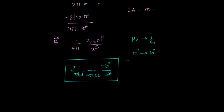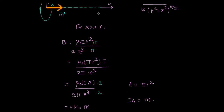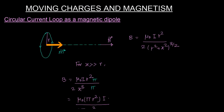So if I replace mu naught by 1 upon epsilon naught, m by p, and B by E, we get the actual electric field due to an electric dipole. Here we are having the actual magnetic field due to a magnetic dipole. So a circular current loop is acting as a magnetic dipole in exactly the same sense as an electric dipole in the electric field.